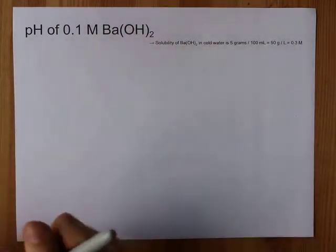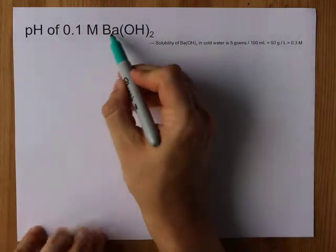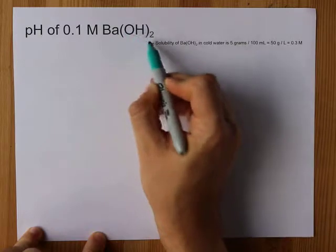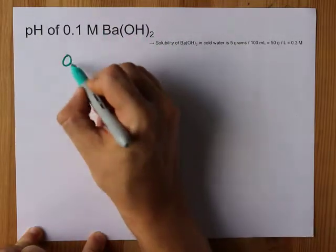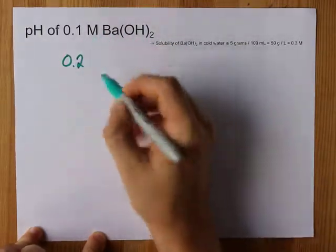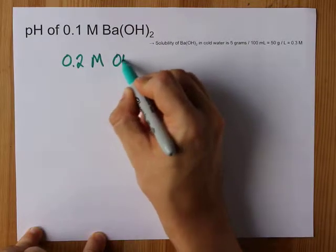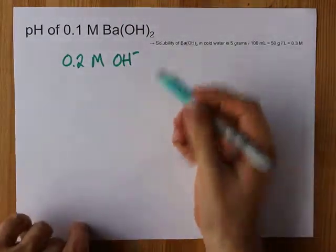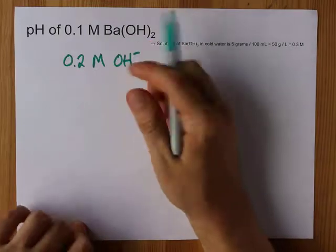Now, your job is to realize that each Ba(OH)2 molecule gives you 2 or double the concentration of OH- ions when it dissolves. That's the only trick here.